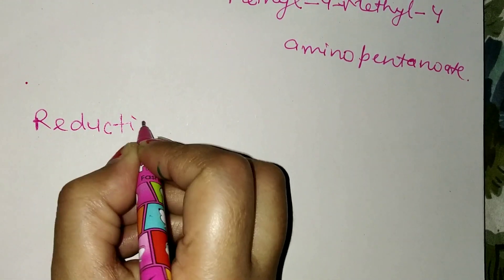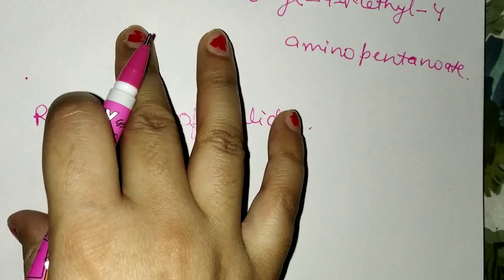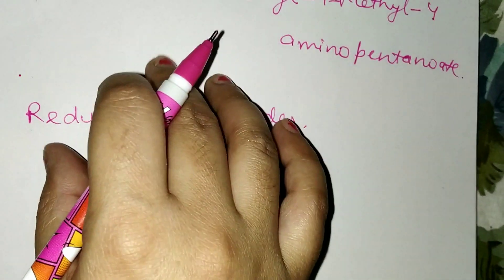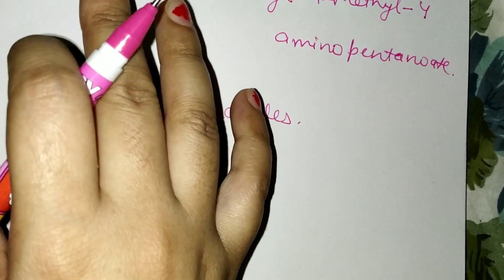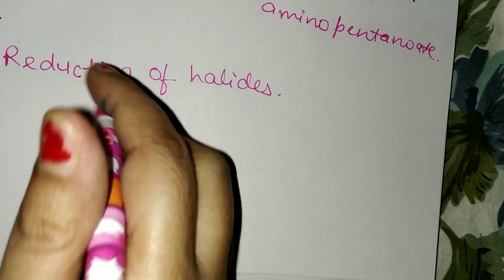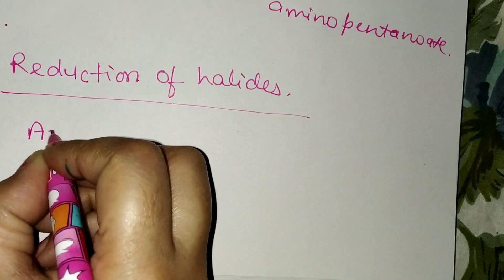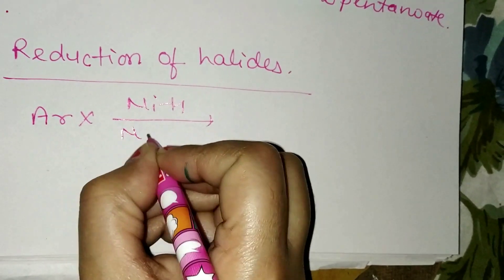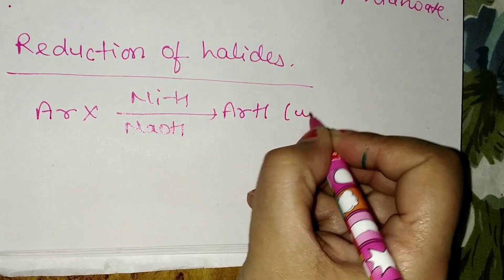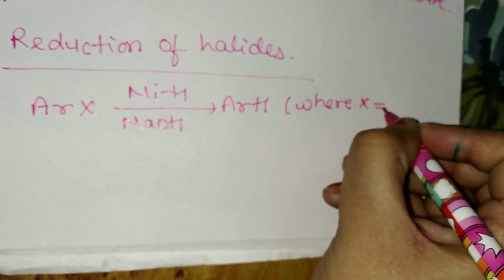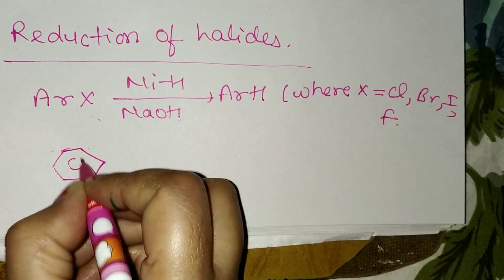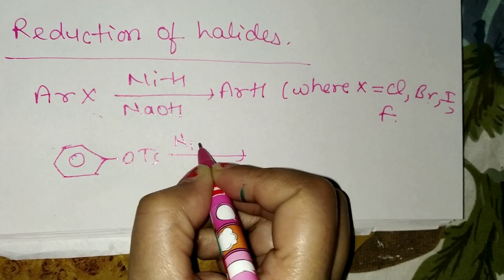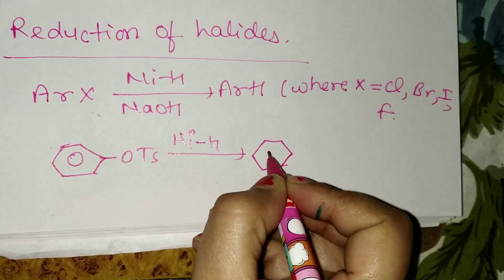Next, reduction of halides. Dehalogenation is accomplished by several reagents. The advantage of using Raney nickel is that it removes all the halogens including fluorine. Similarly, phenyl tosylate can be reduced. For example, aryl halides change into benzene in the presence of Raney nickel and sodium hydroxide, where X is chlorine, bromine, iodine, or fluorine.